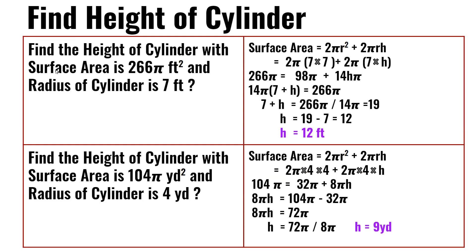Find the height of a cylinder with a surface area of 266π feet squared and a radius of 7 feet. 2π(7×7) + 2π(7×h). 7×7 is 49; 49 times 2π is 98π. 2π×7×h is 14hπ. So 266π = 98π + 14hπ. Factoring: 14π(7+h) = 266π; 7+h = 266π ÷ 14π = 19. Therefore h = 19 − 7 = 12 feet.